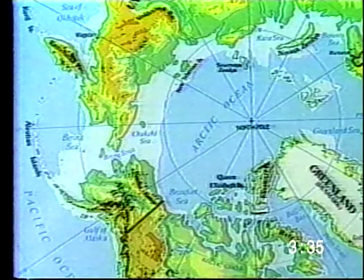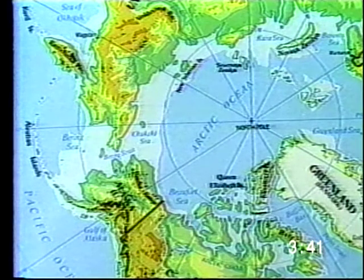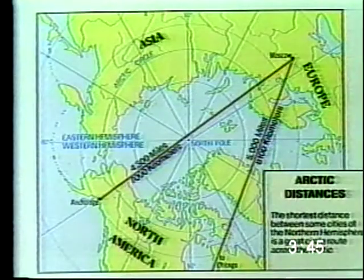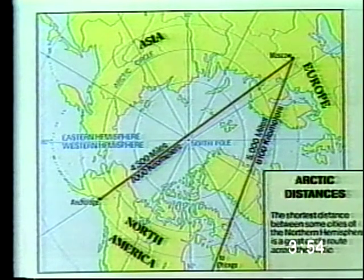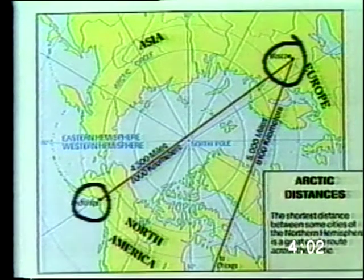Another type of map is the polar map. A polar map is shown as a round map with either the North Pole or the South Pole at the center. On a polar map showing the North Pole, you can see how close the continents in the Northern Hemisphere are to each other. This makes it useful for pilots who fly the polar routes. These polar routes actually cut flying time, for example, between cities in North America, Northern Europe, and Asia.